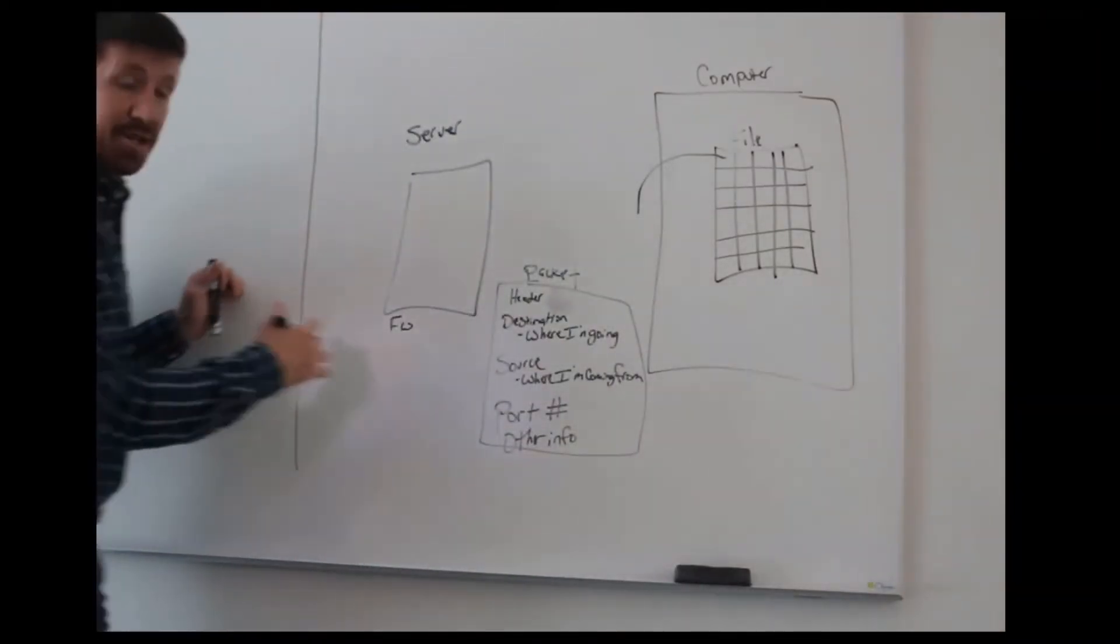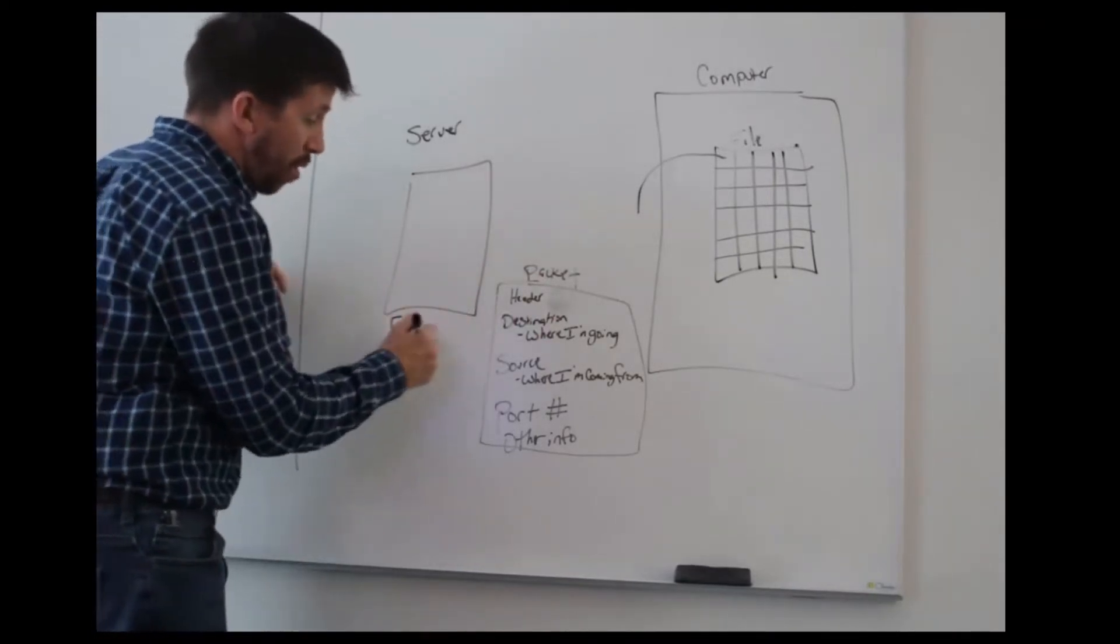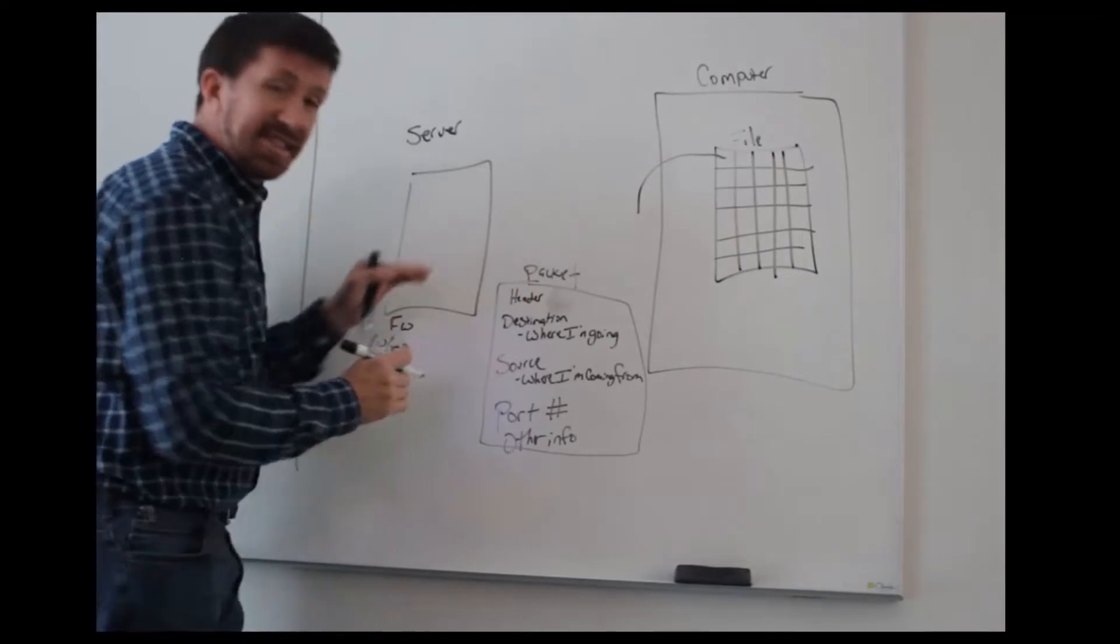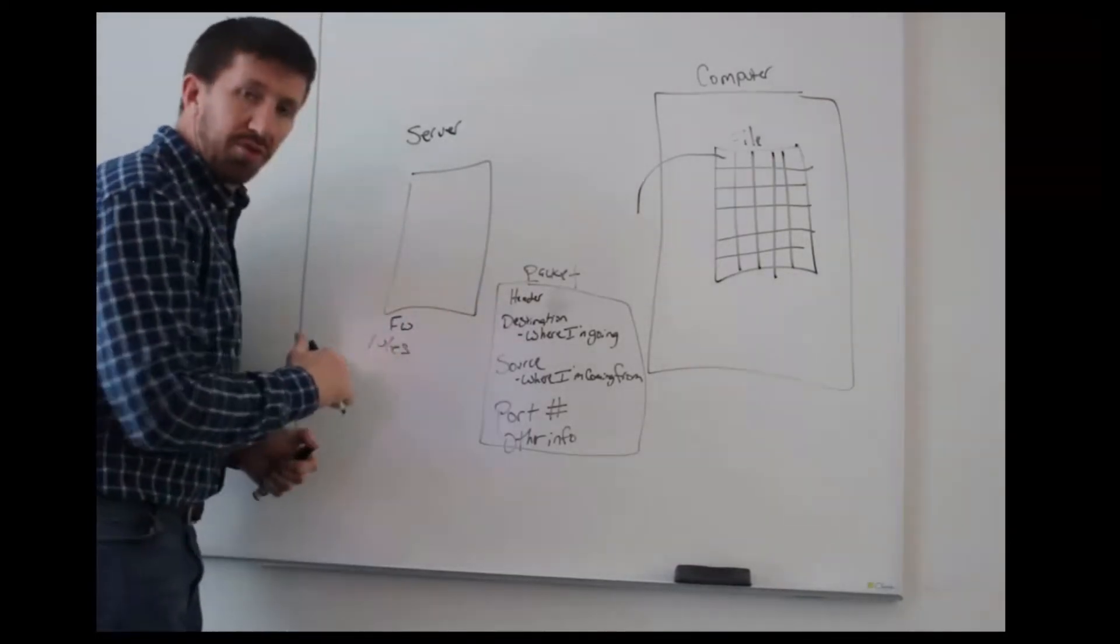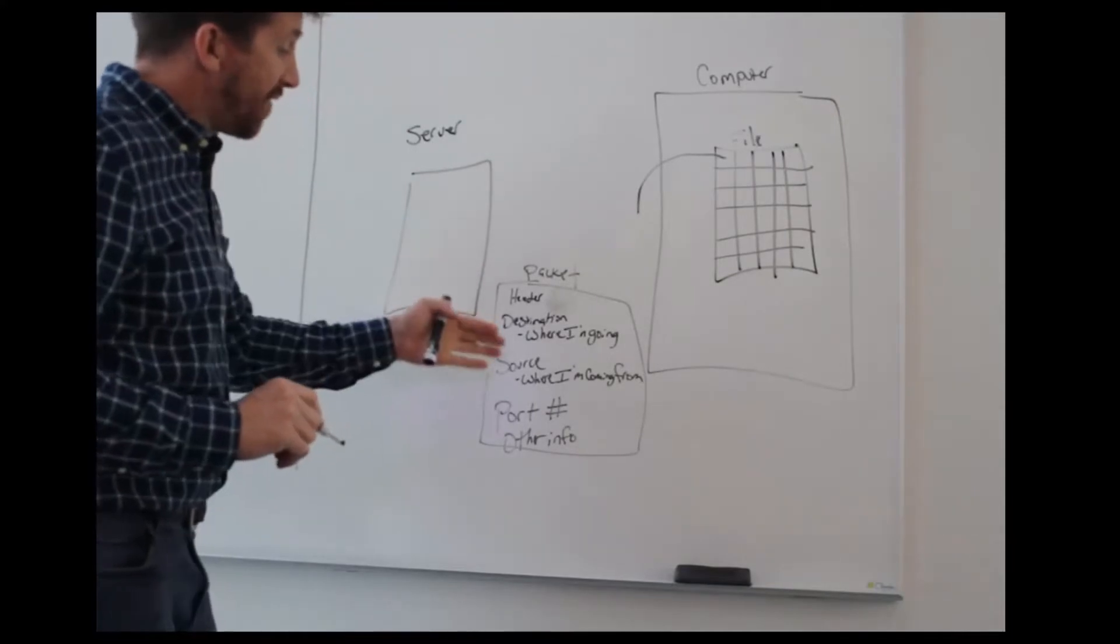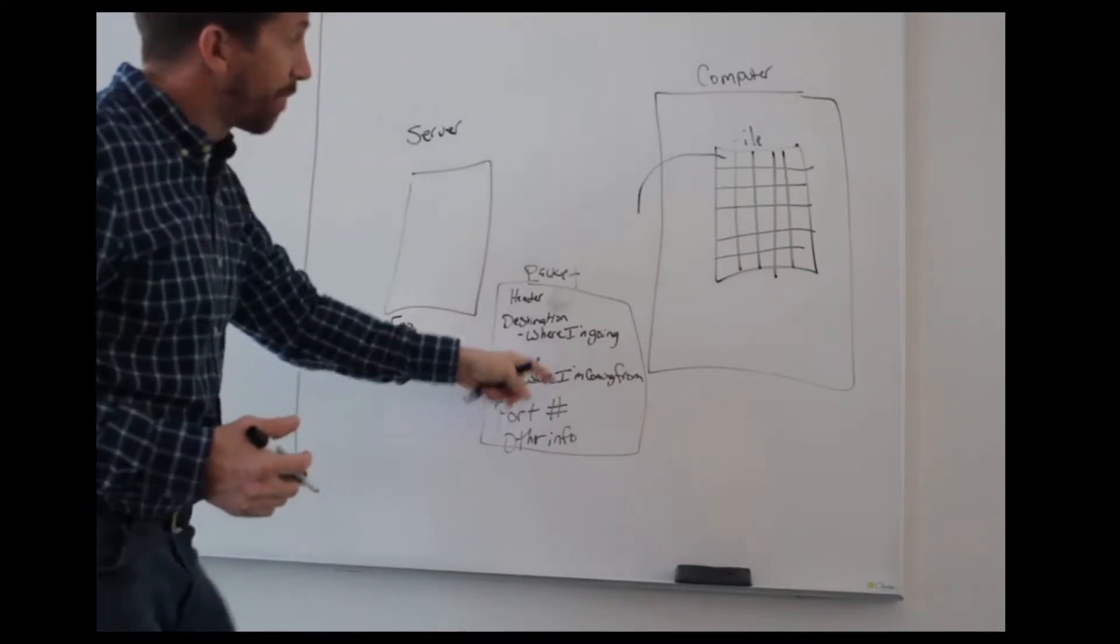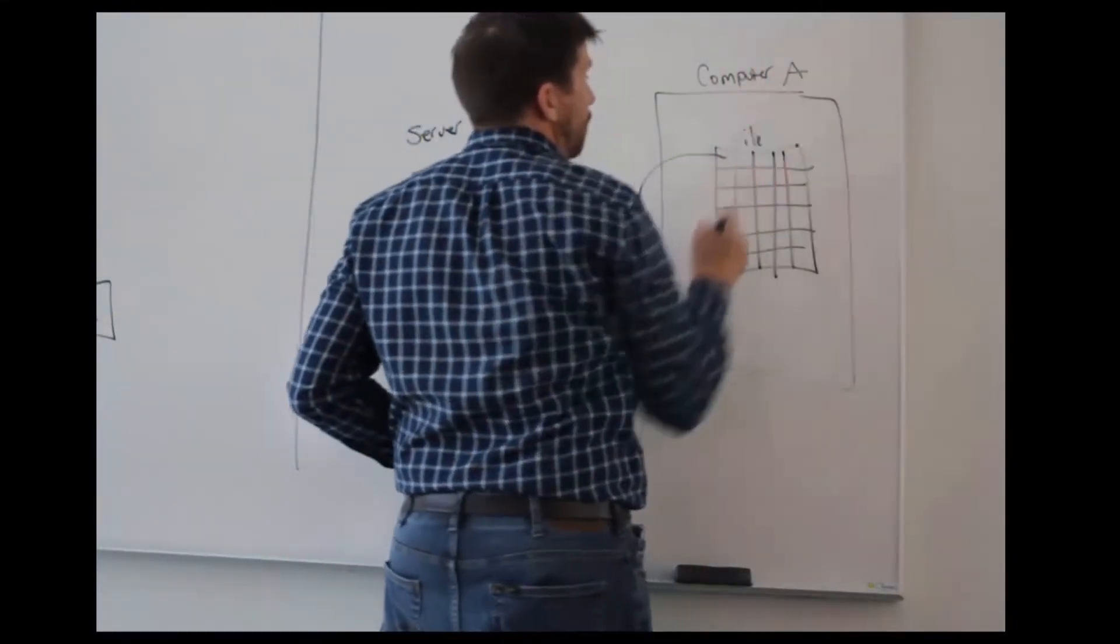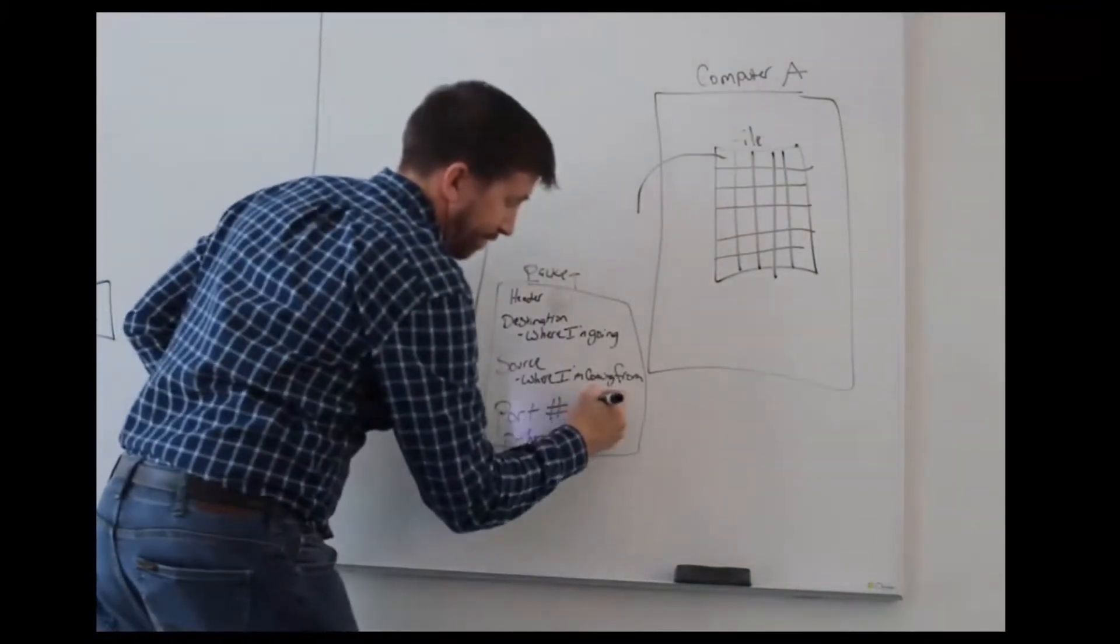Once we get to the firewall or the server, we get to the server because that's where the packet has come. The firewall has a set of rules and it inspects those packets against those rules. So it looks at the rule and if it says I'm coming to this server, which obviously it is, I'm coming from computer A - we'll call it computer A -